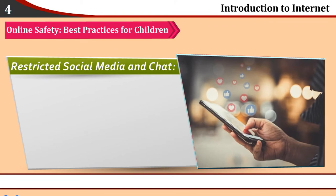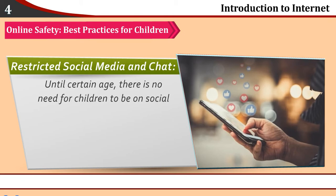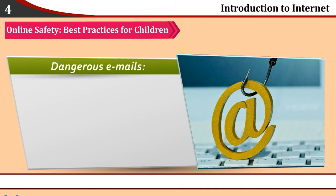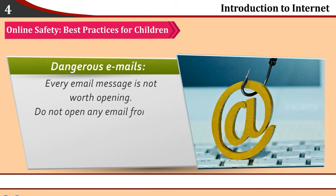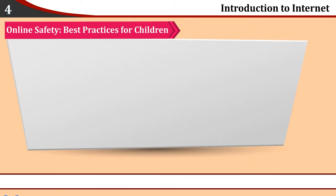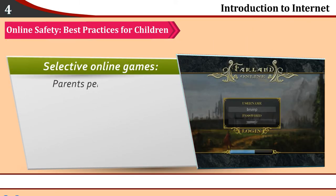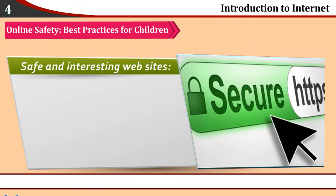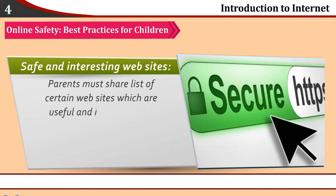Restricted Social Media and Chat: Until a certain age, there is no need for children to be on social media and any online chat. They need to spend more quality time with parents, relatives and friends. Dangerous Emails: Every email message is not worth opening. Do not open any email from any unknown or strange-looking source — delete such emails immediately. Selective Online Games: Parents' permission and approval is required by the children to play any online game. Safe and Interesting Websites: Parents must share a list of certain websites which are useful and interesting for children.